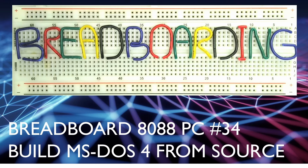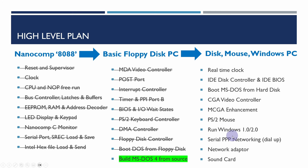Welcome to Breadboarding. This is video 34 in the Breadboard 8088 PC series. In this video I'm going to be building MS-DOS 4 from the recently released source code. If you haven't seen any of the earlier videos, I've been building a basic floppy disk PC on soulless breadboards over the last 33 videos, and in the last video we managed to get an early version of PC-DOS booting from floppy disk.